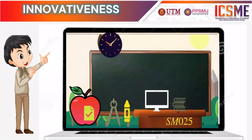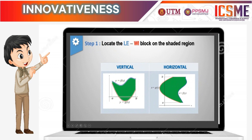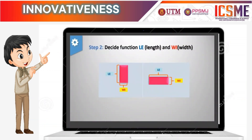To make it clearer, let me illustrate through this diagram. Step 1: locate the Levy block on the shaded region. The block is located vertically when you choose the x boundary, meanwhile it is located horizontally if you choose the y boundary as the limit of integration. Remember, length is longer than width, so we label the longer side as length and the shorter side as width. Step 2: decide the function for length and width. For the vertical block, we have two functions, f(x) and g(x). Length equals the upper function subtract the lower function. Therefore, we have length as f(x) minus g(x), and width is the small change of x, which is dx.